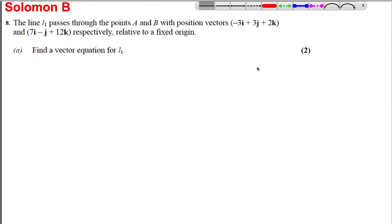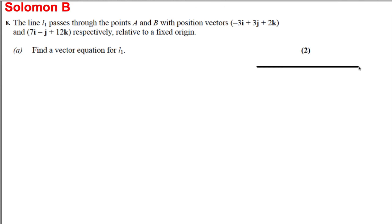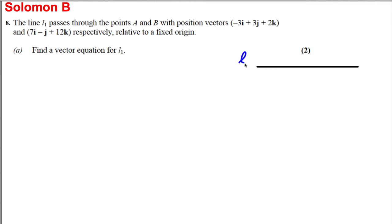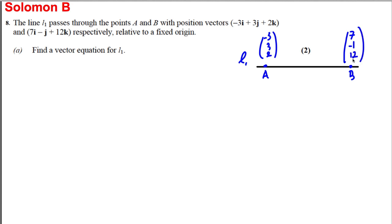Let's draw a quick picture. Here's line L1. Point A is at (−3, 3, 2) and point B has position vector (7, −1, 12), with the origin somewhere off to the side. We need to find the vector equation of the line.